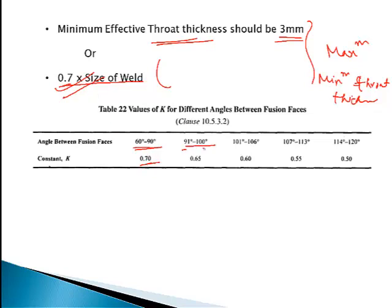If the angle changes — i.e., the angle between the two plates is not 60 to 90 degrees — then this constant 0.7 will change. The value is given in Table 22 of IS 800:2007.